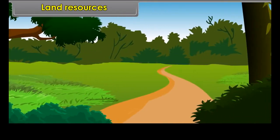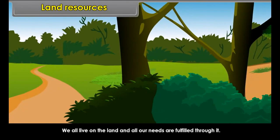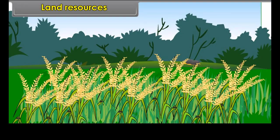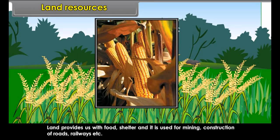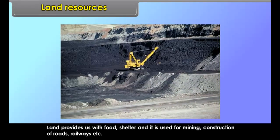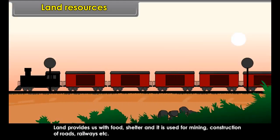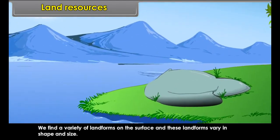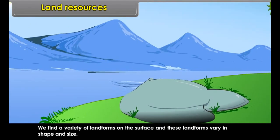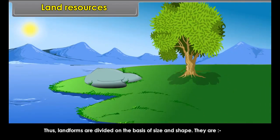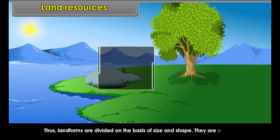Land resources. We all live on the land and all our needs are fulfilled through it. Land provides us with food, shelter and it is used for mining, construction of roads, railways, etc. We find a variety of landforms on the surface and these landforms vary in shape and size. Thus, landforms are divided on the basis of size and shape. They are mountains, plateaus and plains.